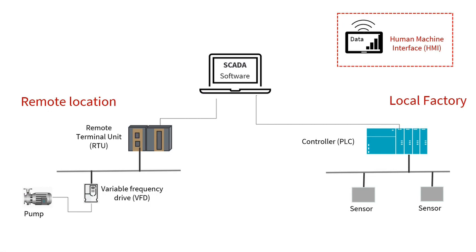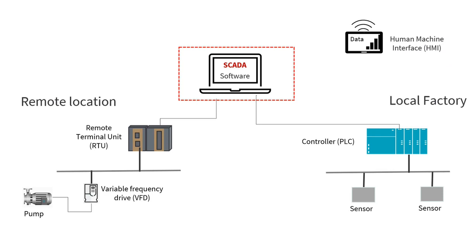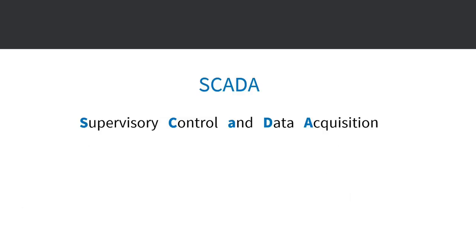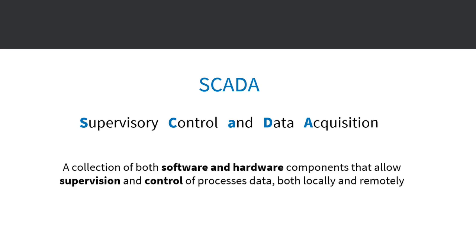You can also see a human-machine interface, or HMI. These devices gather information and data and send them to the computers with SCADA software. The name SCADA describes the mechanism of the system — it is a collection of both software and hardware components that allow supervision and control of process data, both locally and remotely.